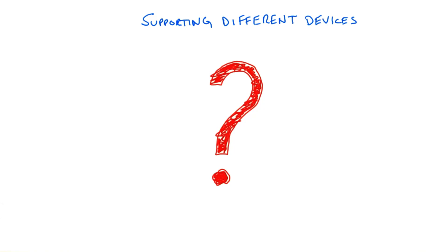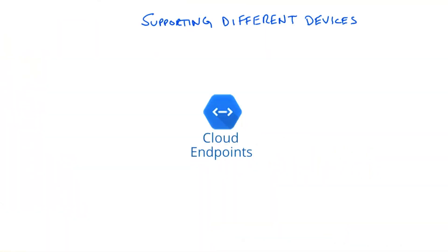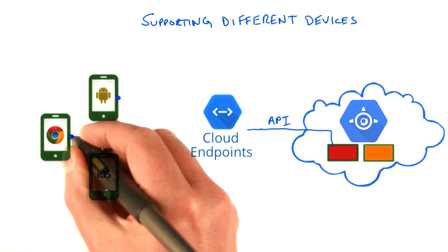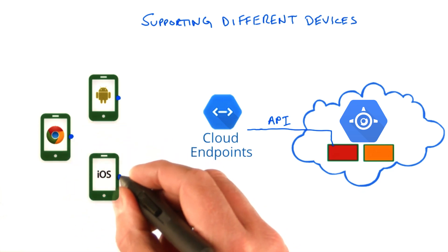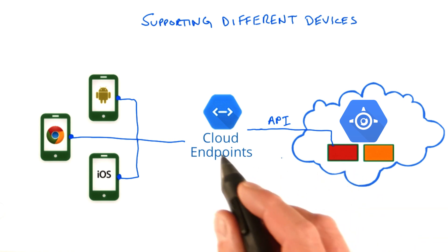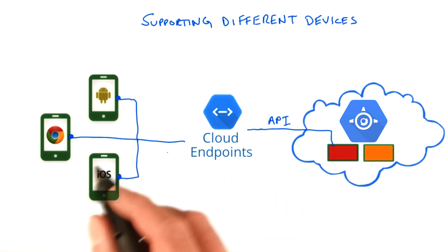Having to consider this when you design your server-side application is a lot of work. So how can we solve this problem? Well, the Google Cloud Platform has solved this problem for you with a product called Cloud Endpoints. When you use Cloud Endpoints, you can create one single API for your server application called a Cloud Endpoints API. Cloud Endpoints can then generate a client-side API for many different devices for many different vendors. This allows you to focus on your server-side application, and Cloud Endpoints will make sure that it supports many different devices.